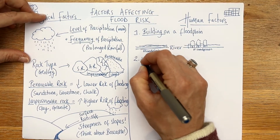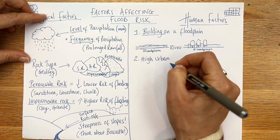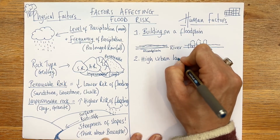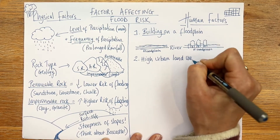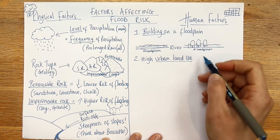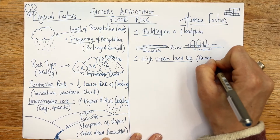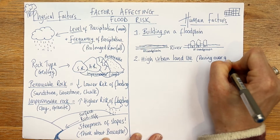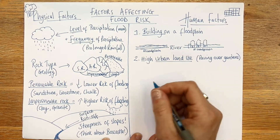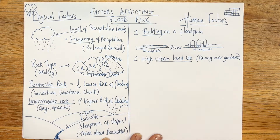Moving on, our second human factor is urban land use. In areas with high urban land use — built-up towns and cities — you are going to have a higher likelihood of flooding. For example, paving over gardens doesn't seem like much, but they all add up and can have a huge impact on whether an area is going to flood.